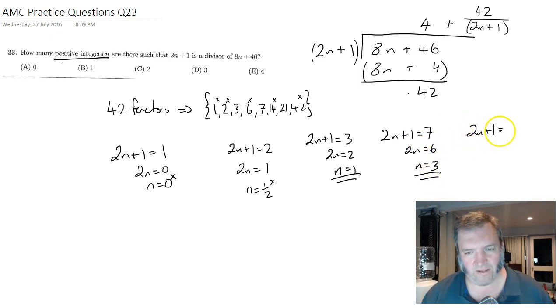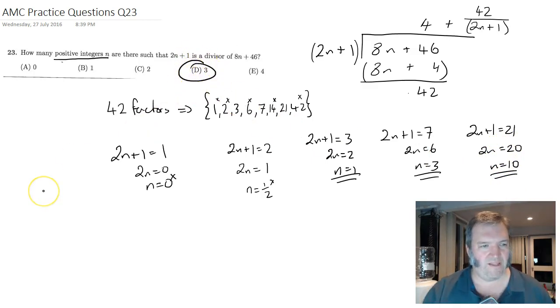And 2n plus 1 equaling 21. 2n equals 20. n equals 10. And that's your third solution. So there are three possible solutions. The answer to this one is also D.